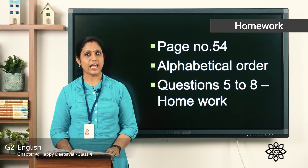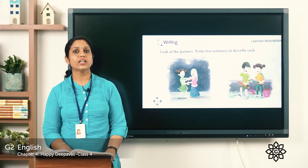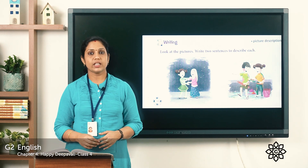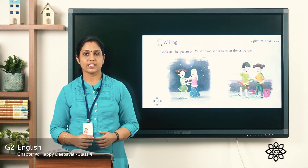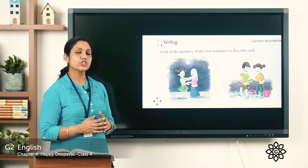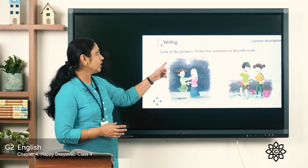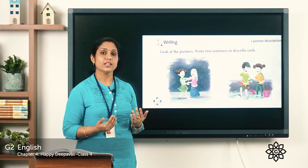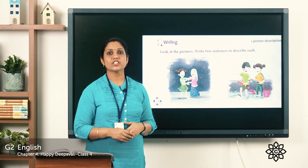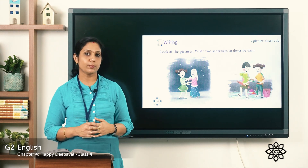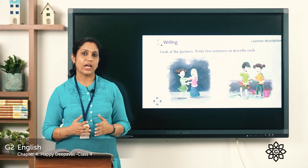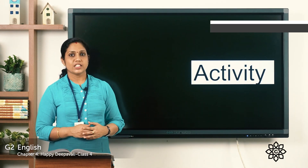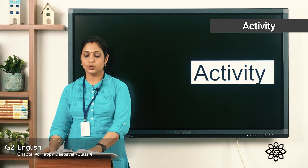Next we have a writing activity. Look at the pictures given. Write two sentences to describe each picture. In the first picture you can see two children celebrating Ramzan — you can see the moon in the sky. Muslims celebrate Ramzan. In the second picture, children are playing with colors, which is the festival of Holi. Write two sentences about each festival in your notebook.